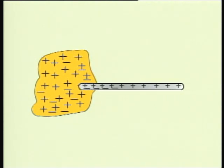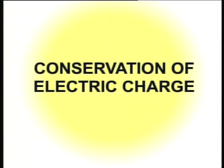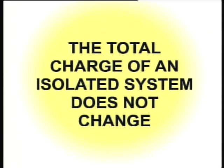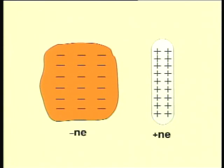Another important property of electric charge is that it is conserved. Conservation of electric charge means the total charge of an isolated system does not change. For example, when a glass rod is rubbed with silk, the amount of positive charge acquired by the glass rod is exactly equal to the amount of negative charge produced on the silk. The algebraic sum of charges on the glass rod and the silk before and after rubbing continues to be zero. Positive charges are those which lose electrons, and negative charge bodies are those which gain electrons.